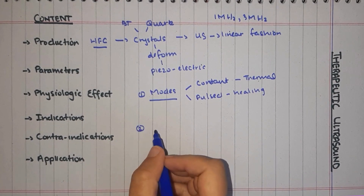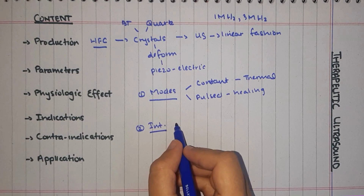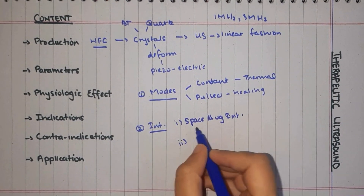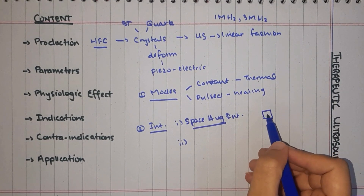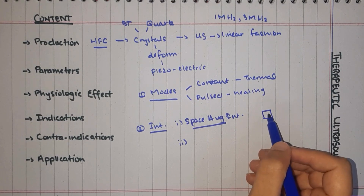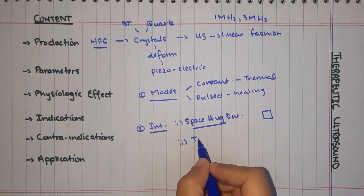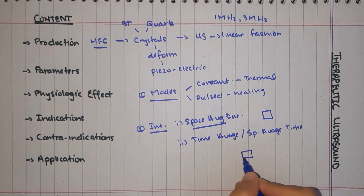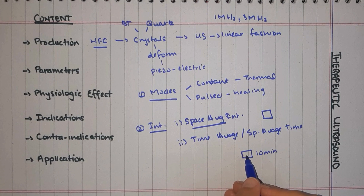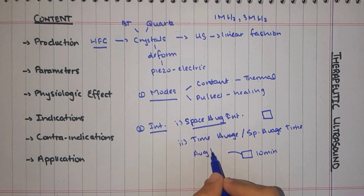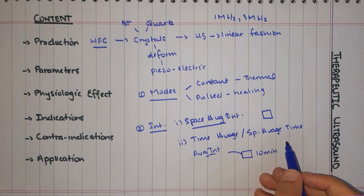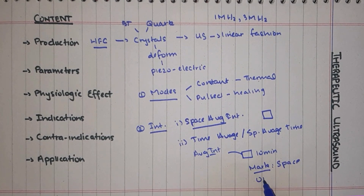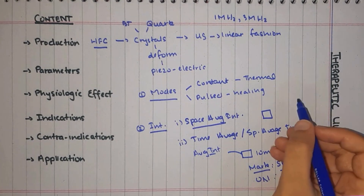The second parameter is intensity. There are two important terms to understand: space average intensity and time average intensity. Space average refers to the specific treatment area, while time average refers to the average intensity over the treatment session — for example, a 10-minute session. Another important concept here is the mark-space ratio, which is used in pulse mode.